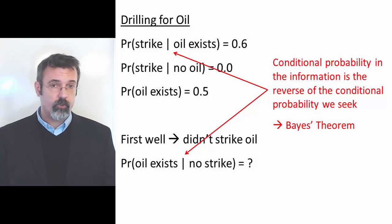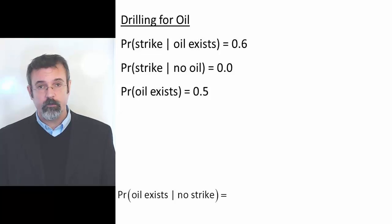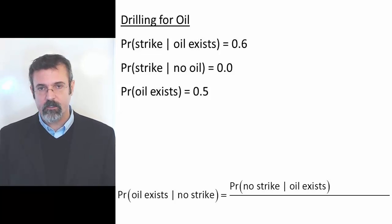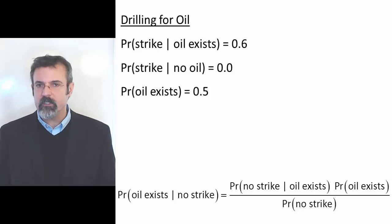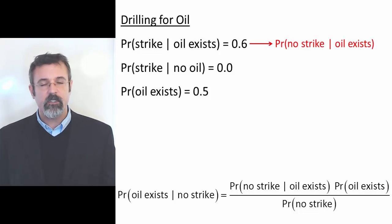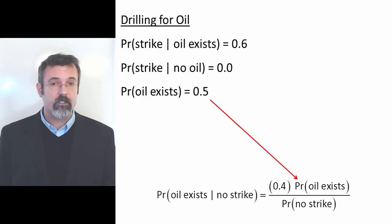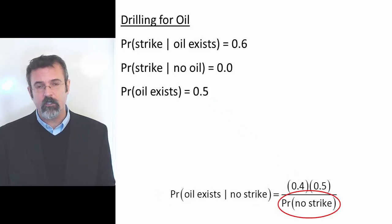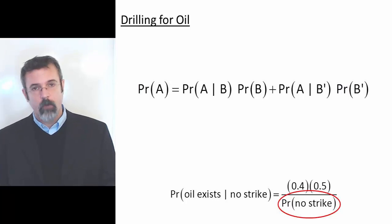So let's begin with Bayes' Theorem. The question we're trying to answer is: what is the probability that oil exists given that we did not strike oil? Using Bayes' Theorem, this equals the probability of not striking oil given that oil exists, multiplied by the probability that oil exists, divided by the probability of not striking oil. We know the probability of striking oil given that oil exists is 0.6, so the probability of not striking oil given that oil exists is 1 minus 0.6, or 0.4. The probability that oil exists we believe a priori to be 0.5. That leaves us to find just one number: the probability of not striking oil. There's nothing in the problem that directly gives us this, but we do have conditional probabilities involving striking oil, which suggests we can use the equation relating marginal and conditional probabilities.